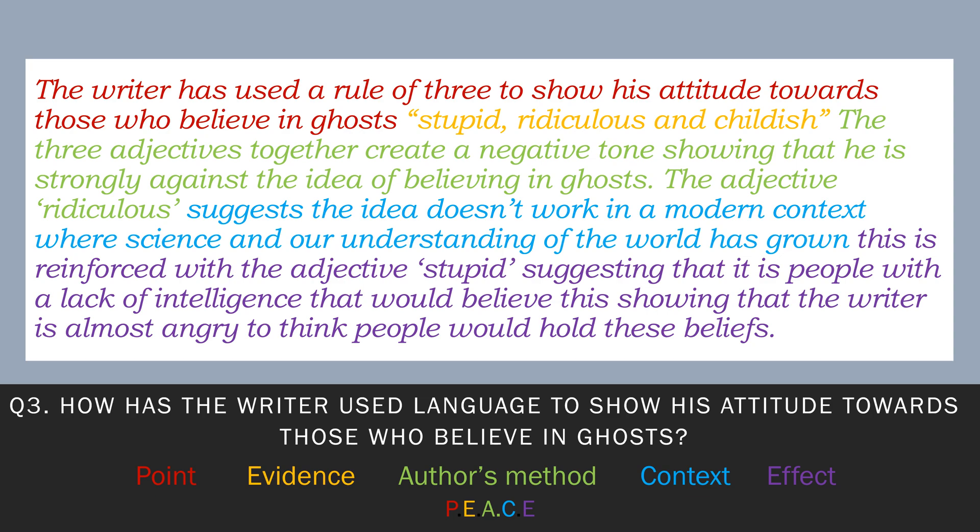Then we have Context. Context is a really important thing, and this will differ between a 19th century and a modern text, so you always need to make sure that you're aware of what context the piece is written in. Finally, we have Effect — the overall effects of the techniques and how this relates to the question.